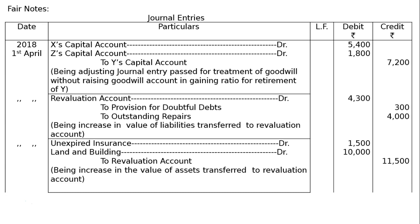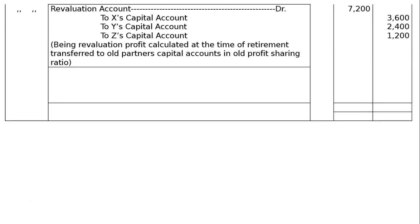Second last entry: transfer revaluation profit. Revaluation account debited 7,200, to X's capital account 3,600, to Y's capital account 2,400, to Z's capital account 1,200. Narration: being revaluation profit transferred to old partners' capital accounts in old profit sharing ratio 3:2:1.